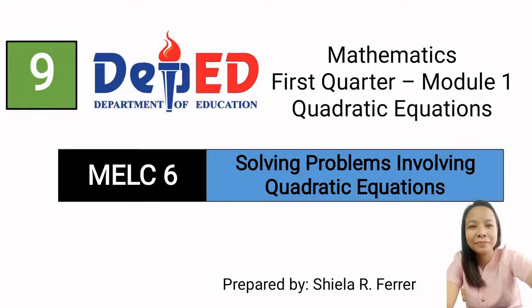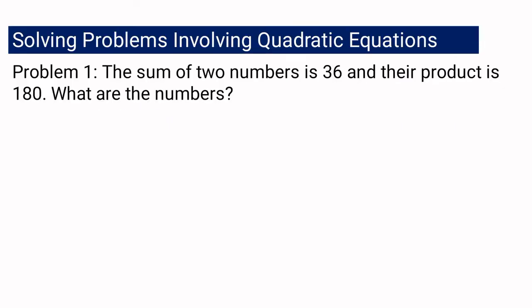For competency number 6, we have solving problems involving quadratic equations. Let us have the first example. Problem number 1: The sum of two numbers is 36 and their product is 180. You are about to find the numbers.